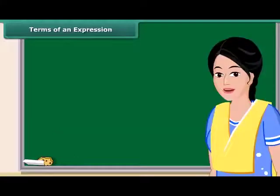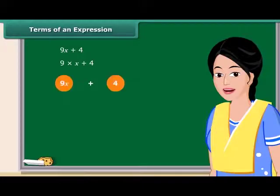Now, we will discuss what terms of an expression and their factors are. Consider the expression 9X plus 4. In forming this expression, we first formed 9X separately as a product of 9 and X and then added 4 to it. You have seen these expressions have parts which are formed separately and then added. We call these parts as terms.